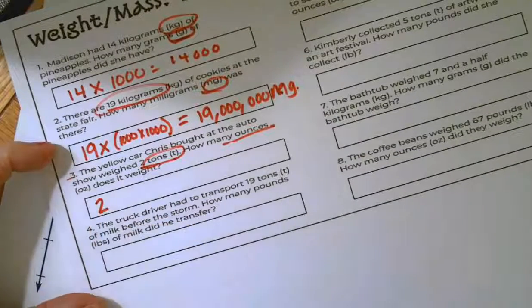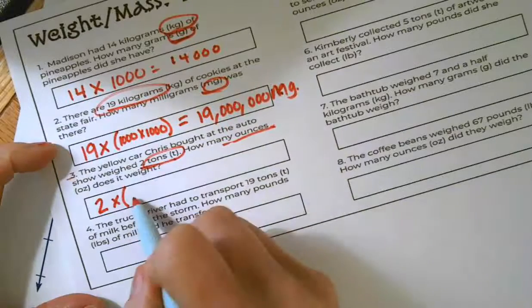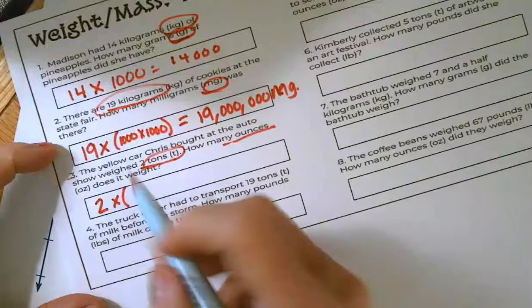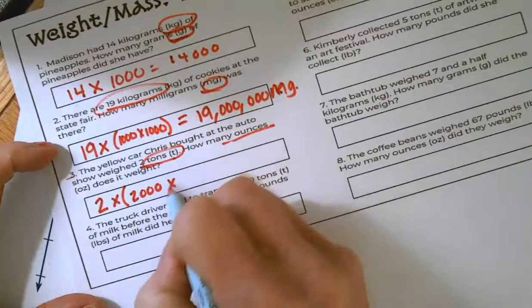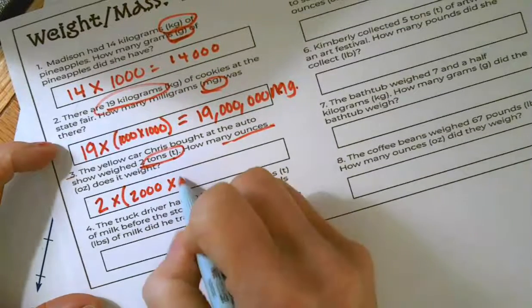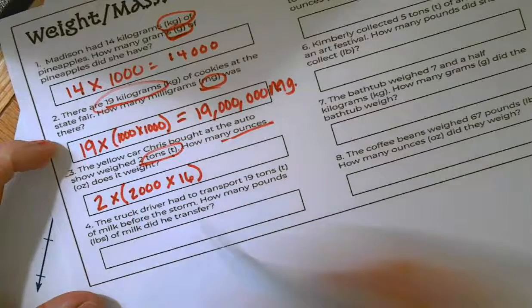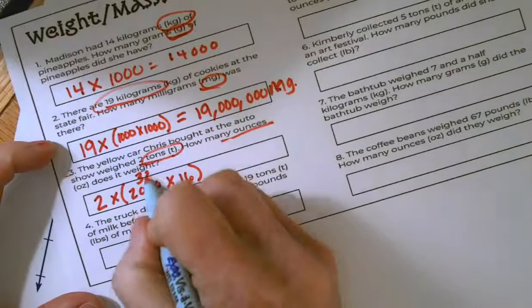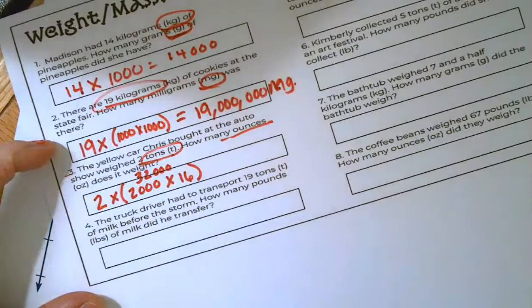All right. We have the two-ton car and we're going to multiply it by the number of pounds in a ton, 2,000, times the number of ounces in each of those pounds, which is 16. Now, 2,000 times 16 is equal to 32 with one, two, three zeros on it.